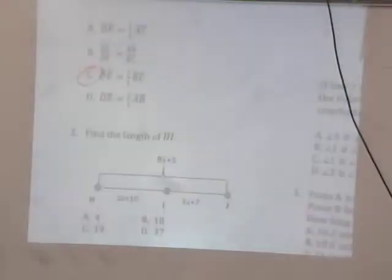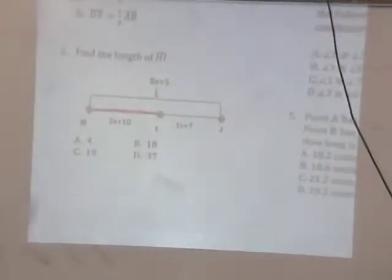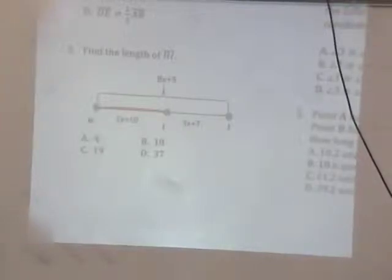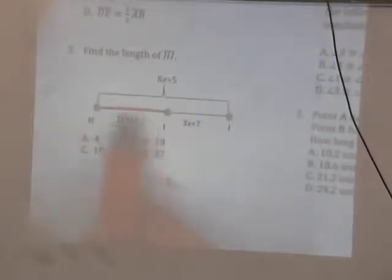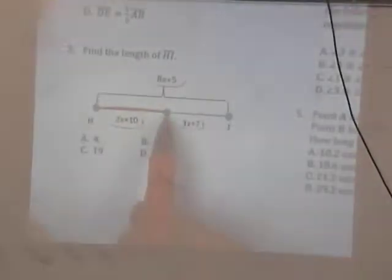All right, number two. Find the length of HI. So basically they want us to find this length right here. I didn't get this one. Shh. Love it. Do we have a question? Yeah. All right. So what equation can we set up here? I've got three different values. This part, this part, and then the whole thing.